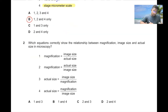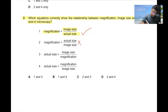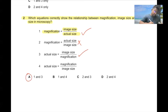Question number two. Which equation correctly shows the relationship between magnification, image size, and actual size in microscopy? Magnification equals image size divided by actual size — this is correct. Magnification equals actual divided by image is wrong. Actual size equals image size divided by magnification — this is also correct. So one and three are correct, making option A correct.